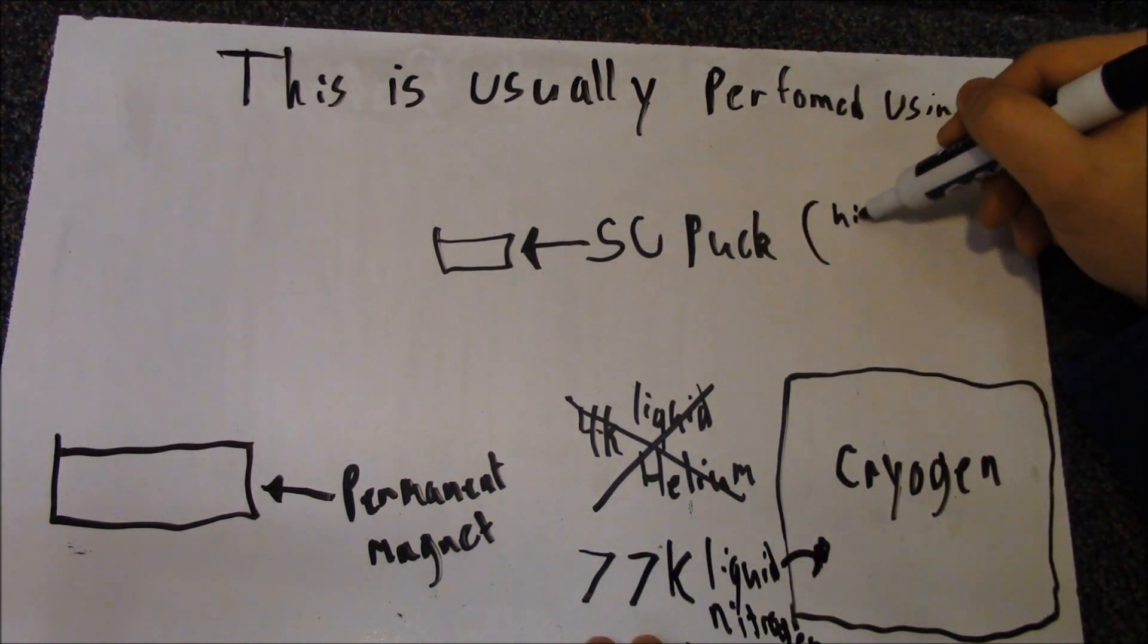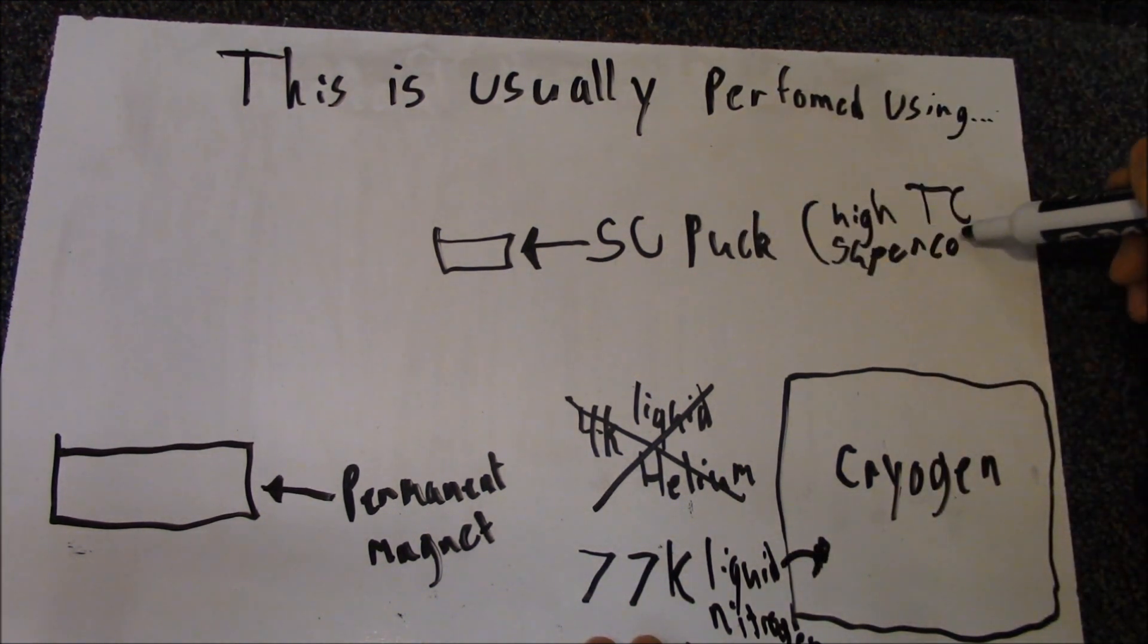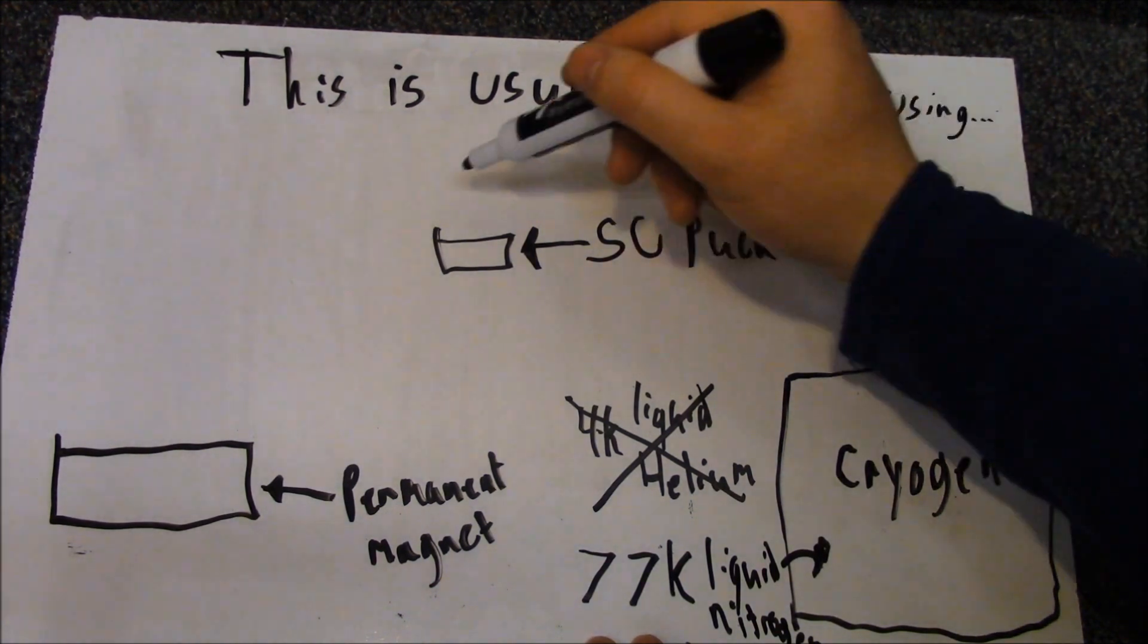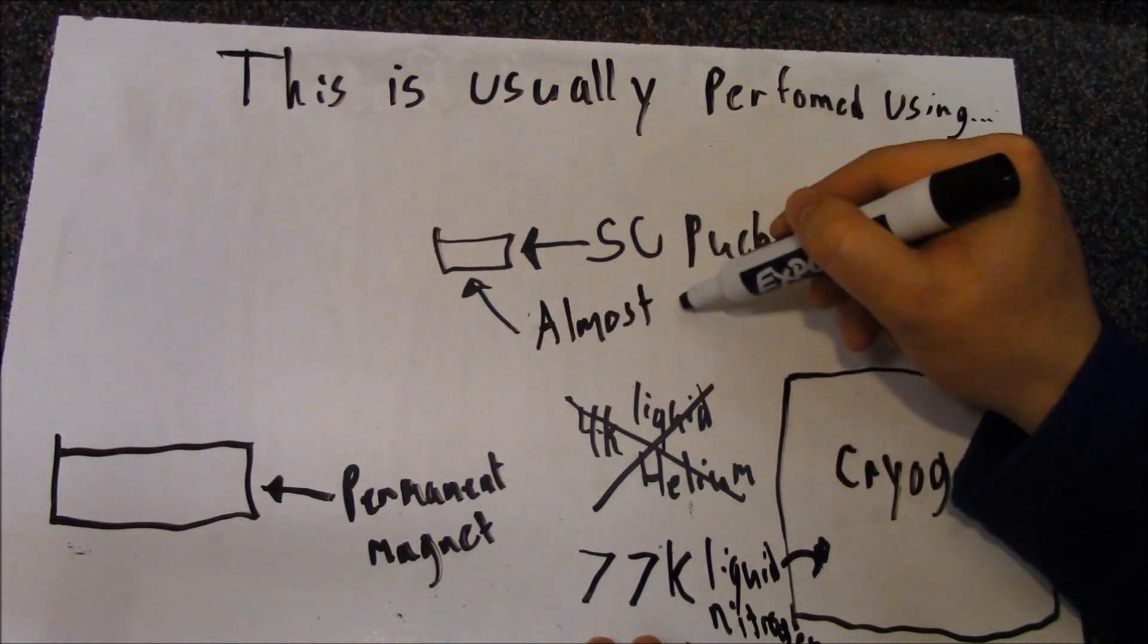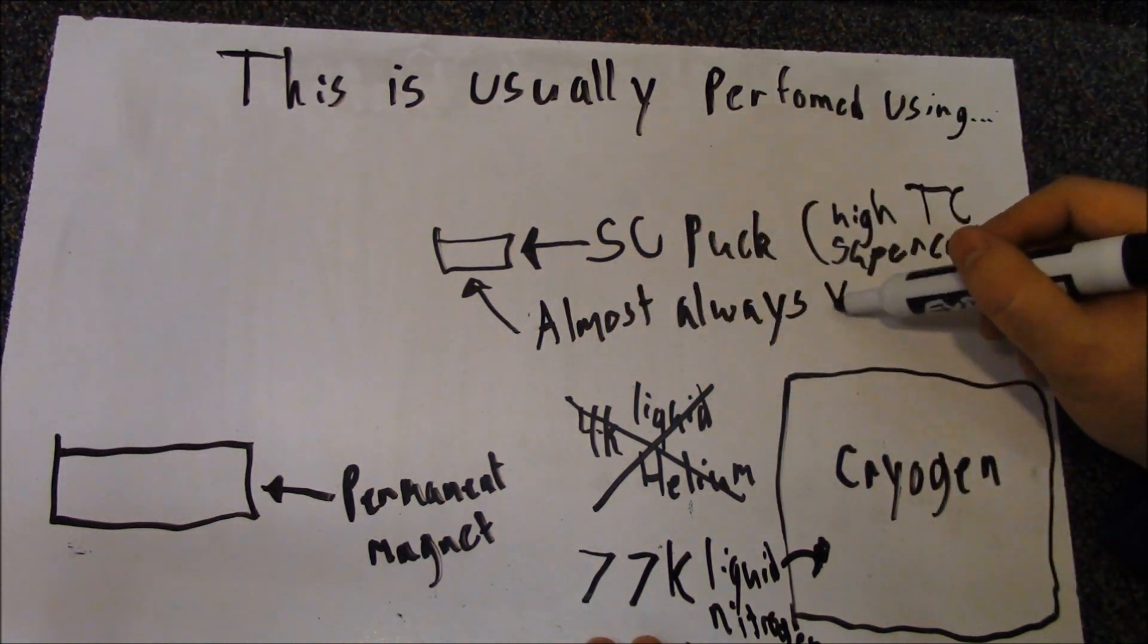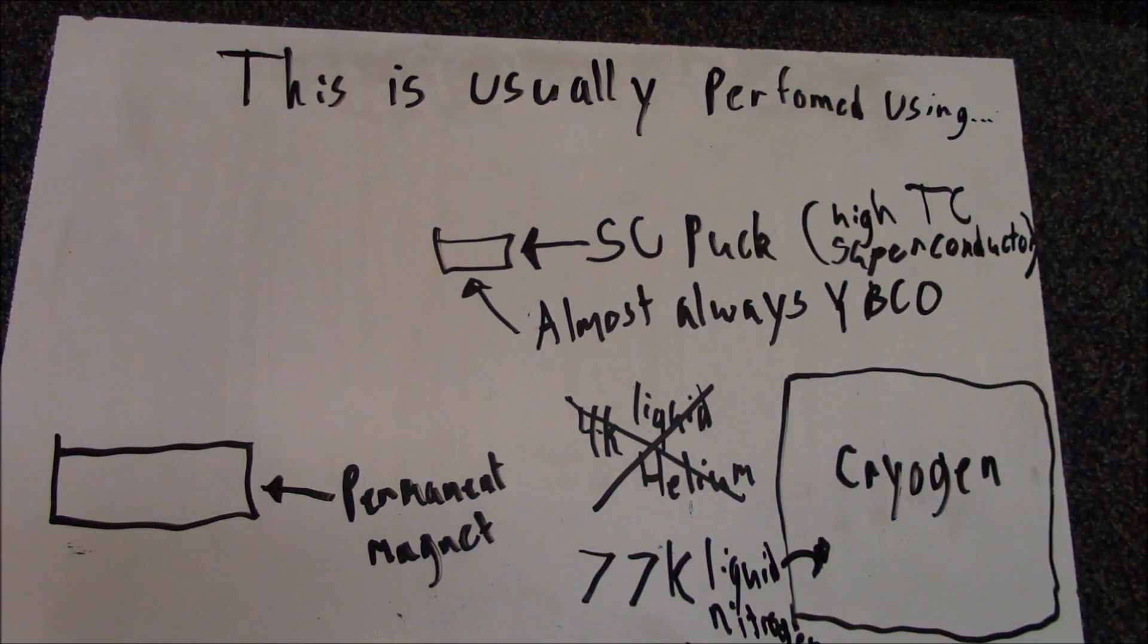This forces us to use high TC superconductors. Most people use YBCO, a Type 2 superconductor. Often they use a fairly thin film of YBCO that has been deposited onto the puck.